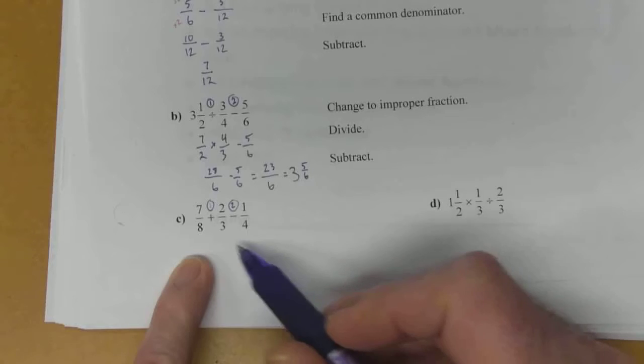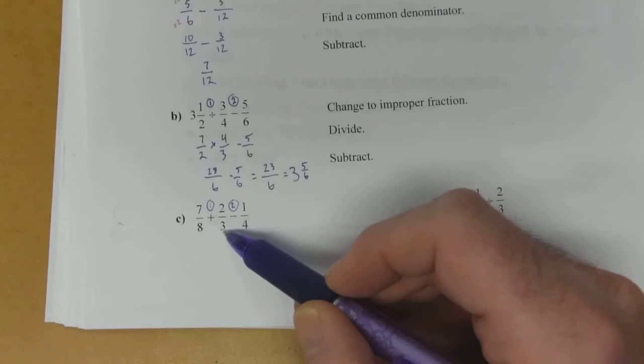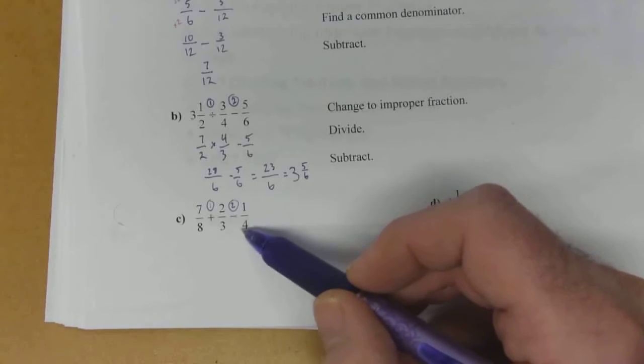So we need a common denominator for both adding and subtracting. 8 and 3. Common denominator for that is going to be 24. And as it turns out, with the 1 fourth, we can use 24 as well.